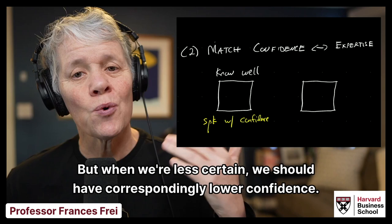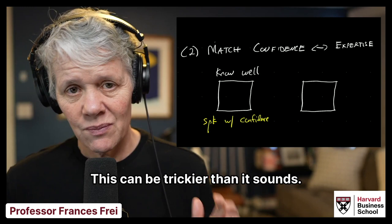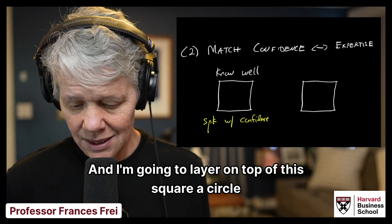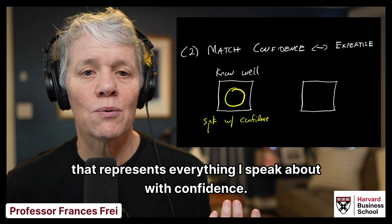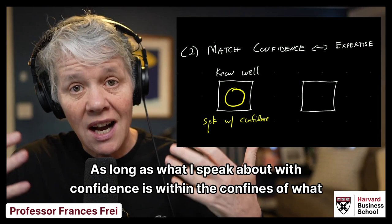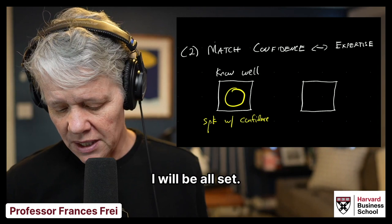This can be trickier than it sounds. So I'm going to give you an example. This square represents everything I know well. And I'm going to layer on top of this square a circle that represents everything I speak about with confidence. As long as what I speak about with confidence is within the confines of what I know well, I won't have any trouble here.